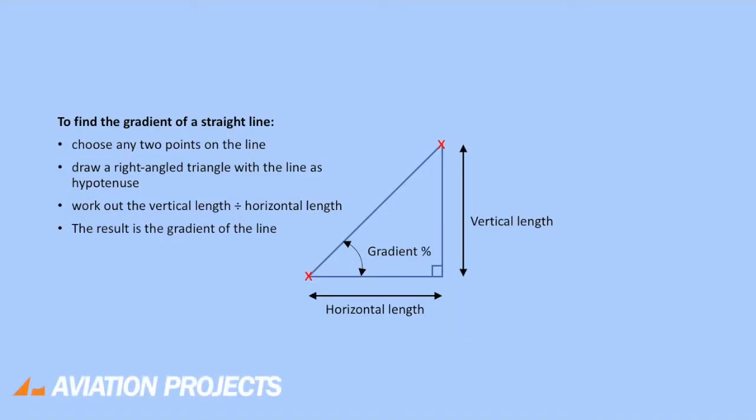To find the gradient of a straight line, choose any two points on the line, draw a right-angled triangle with the line as hypotenuse, and work out the vertical length divided by the horizontal length.